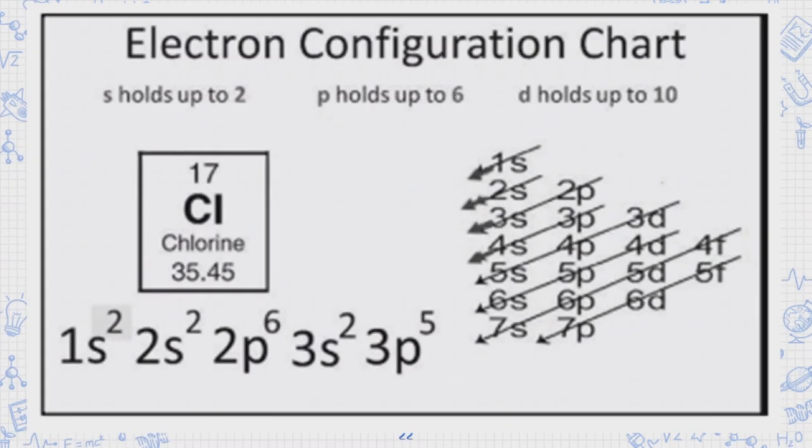Based from the chart of electron configuration, chlorine has 17 atomic numbers. And the electron configuration are 1s2, 2s2, 2p6, 3s2, 3p5. So the number of the electron is equal to the atomic number of chlorine.